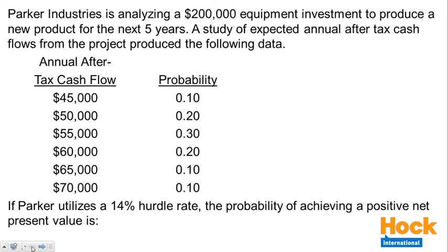Parker Industries is analyzing a $200,000 equipment investment to produce a new product for the next five years. The study of expected annual after-tax cash flows from the project produced the following data: $45,000, $50,000, $55,000, $60,000, $65,000, and $70,000, along with the probability of each of those cash flows occurring. If Parker utilizes a 14% hurdle rate, what is the probability of achieving a positive net present value?